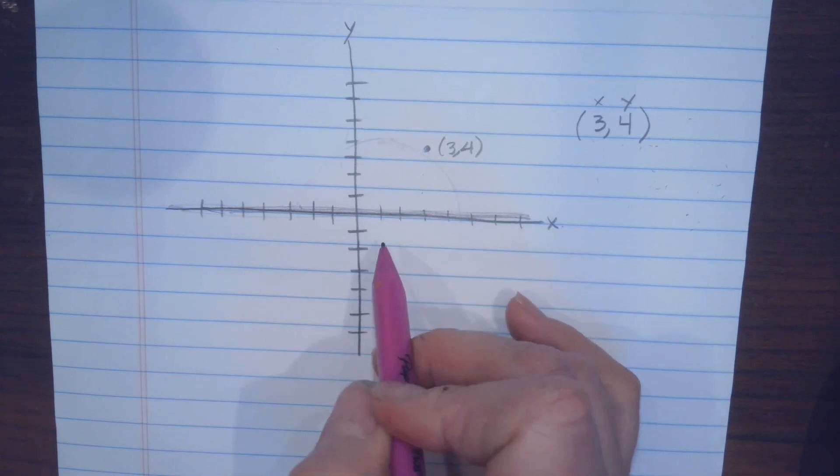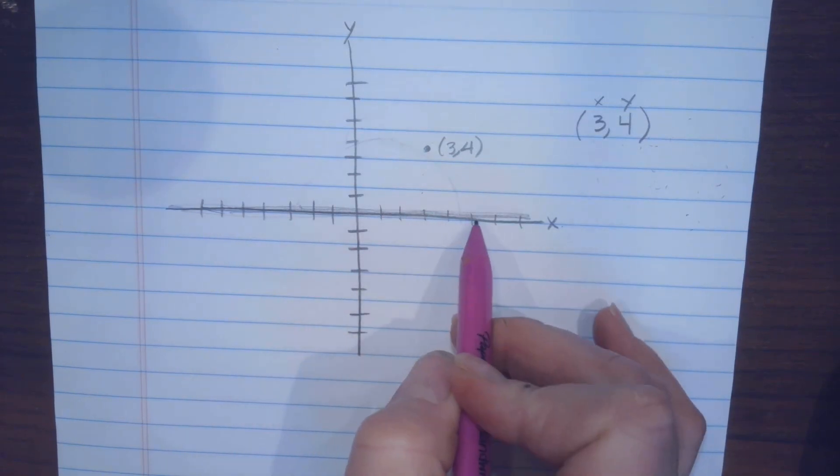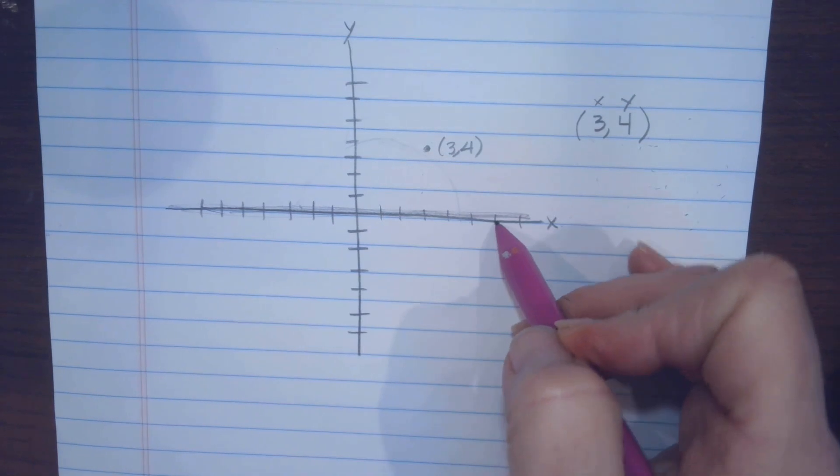So we'll do one more, we're going to do 6, so we're going to do 1, 2, 3, 4, 5, 6, and then we're going to do 6.